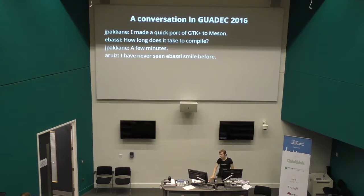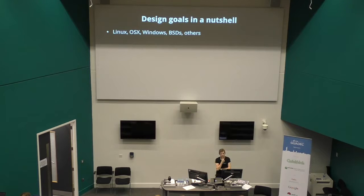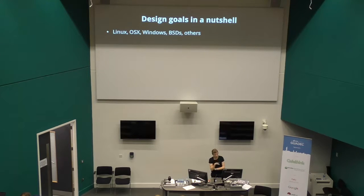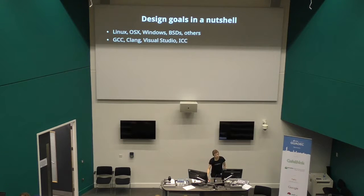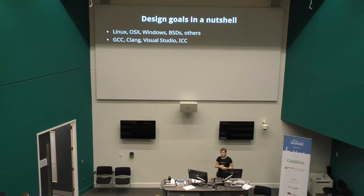So these are the main design points. The design goals in a nutshell: Linux, OS X, BSD, Android, iPhone — all these modern platforms — need to be supported out of the box with a single definition. Support all the compilers: GCC, Clang, Visual Studio, ICC. We have support for about seven different Fortran compilers, which some guy doing physics work sent us, which is kind of cool.